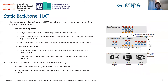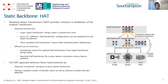Next we will talk about our static backbone, Hardware Aware Transformers or HAT for short. HAT provides solutions to the drawbacks of the original transformer in the form of reduced training times, because there is a large super transformer design space that is only trained once. Up to 10^15 different sub-transformer configurations can be sampled from the default HAT design space. These sampled sub-transformers are then deployed onto target hardware with as little as one fourth of the training time compared to a fully trained sub-transformer. HAT also makes efficient use of resources: the evolutionary search finds the optimal sub-transformer configuration based on real hardware latency datasets obtained from the target hardware.